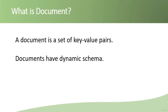A document has a dynamic schema, meaning every document in a collection can have its own fields. For example, one record might have two fields — name and age — while a second record may have a different schema with name, age, and salary. So it is a highly dynamic database in which each document can have its own schema.